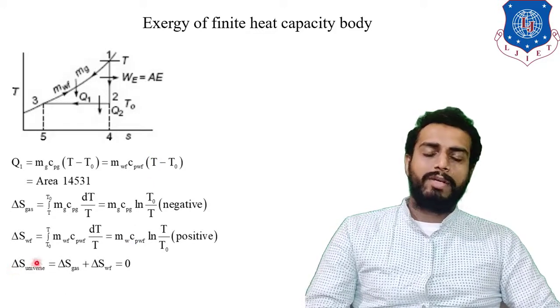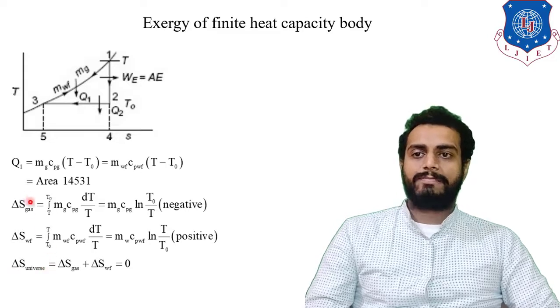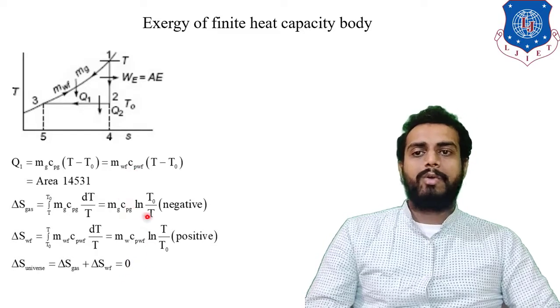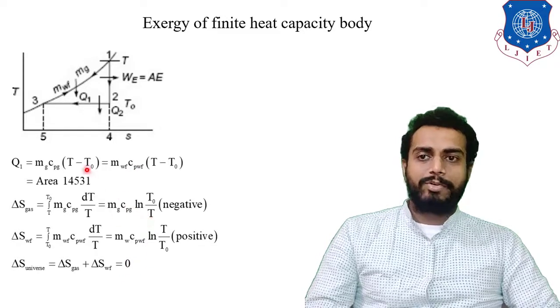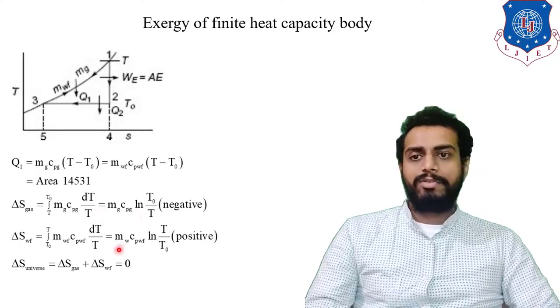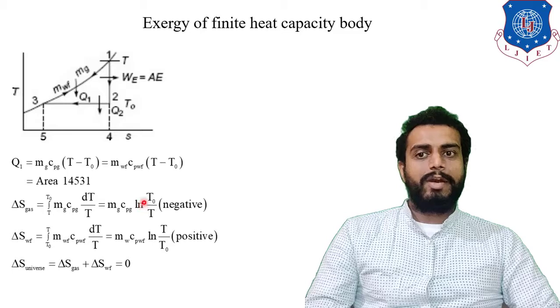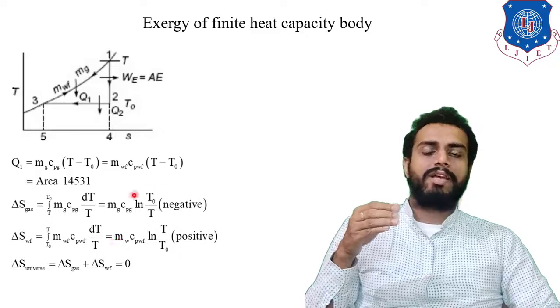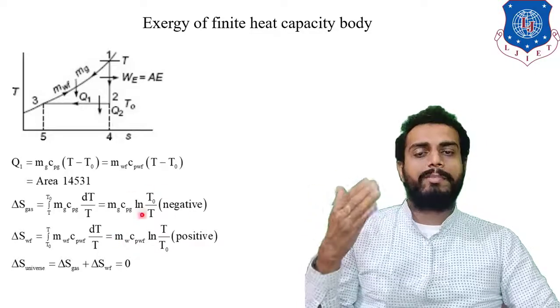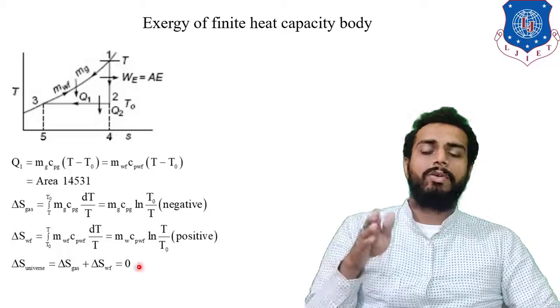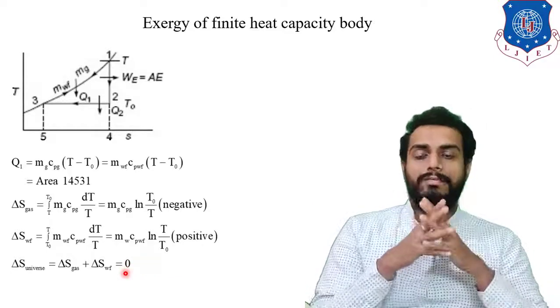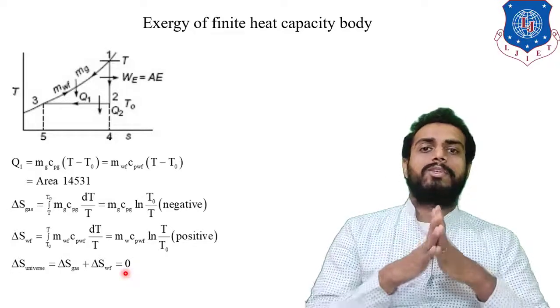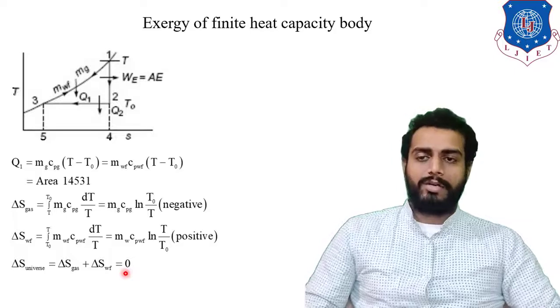Further, Delta S universe will be equal to what? Delta S universe is equal to Delta S gas plus Delta S of working fluid. That will be equal to zero. Because here you can see, how it will be zero? Because I have already told you. Mg CpG and Mw CpWF will be same. And ln T0 and ln T by T0 also are having same value. So this whole will have same value. One will be having negative and one will be having positive value. So now your result will be zero. That means what? This is isolated system. You can treat it as isolated or reversible system. Because your entropy change is zero. Entropy is remaining constant.